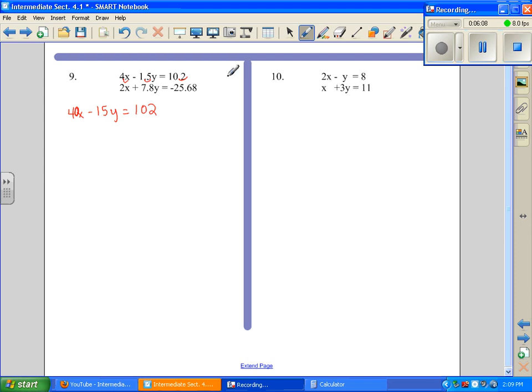In the second equation, I see this has one decimal place, but this one has two. To get rid of all of them, I have to account for the one with the most. I want to shift everything two places to the right. So this becomes 200x plus 780y equals negative 2,568.